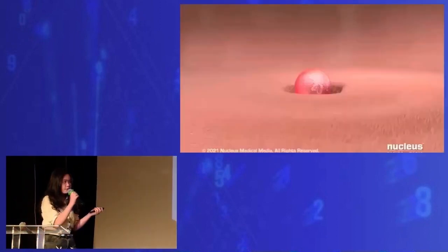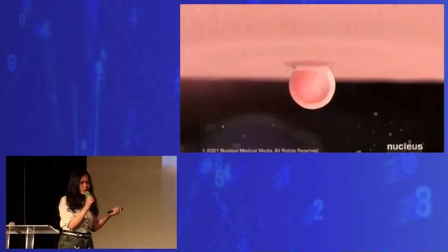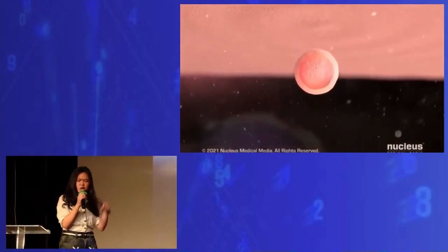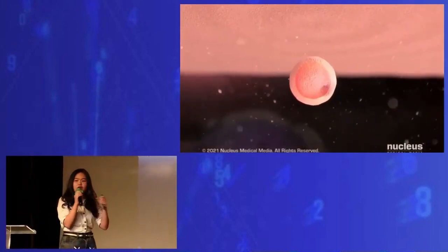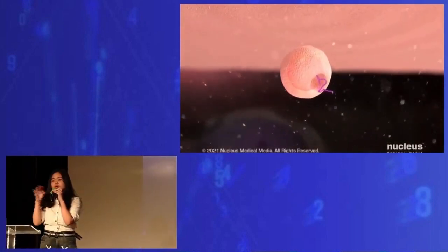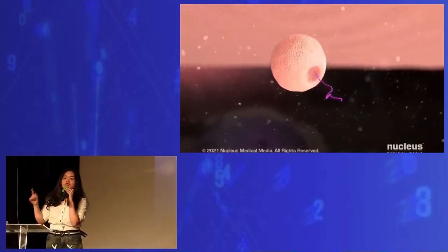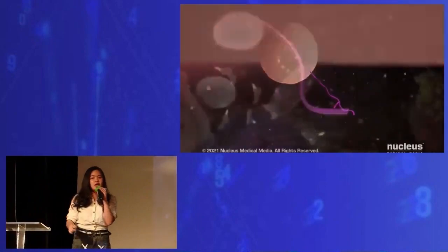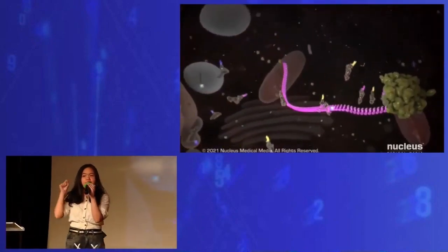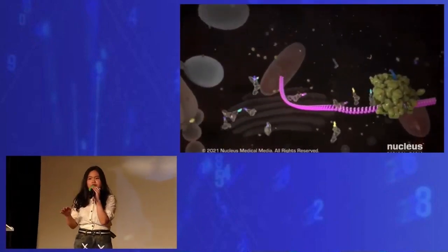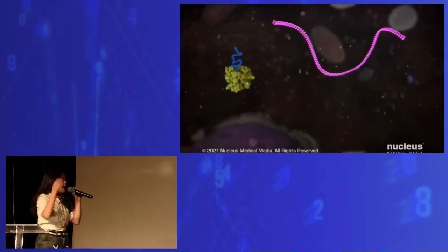If it enters your body, the mRNA travels to the ribosome. Using the mRNA from the vaccine, the ribosome makes a spike protein from the virus.